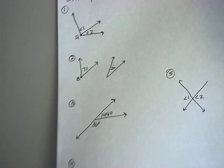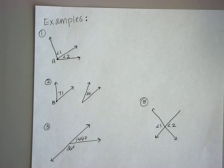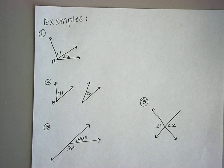So we're going to first talk about labeling examples — using that idea of those angle relationships to label examples. Look at example one. We've got to figure out what type of relationship it is: adjacent, vertical, supplementary, or complementary.